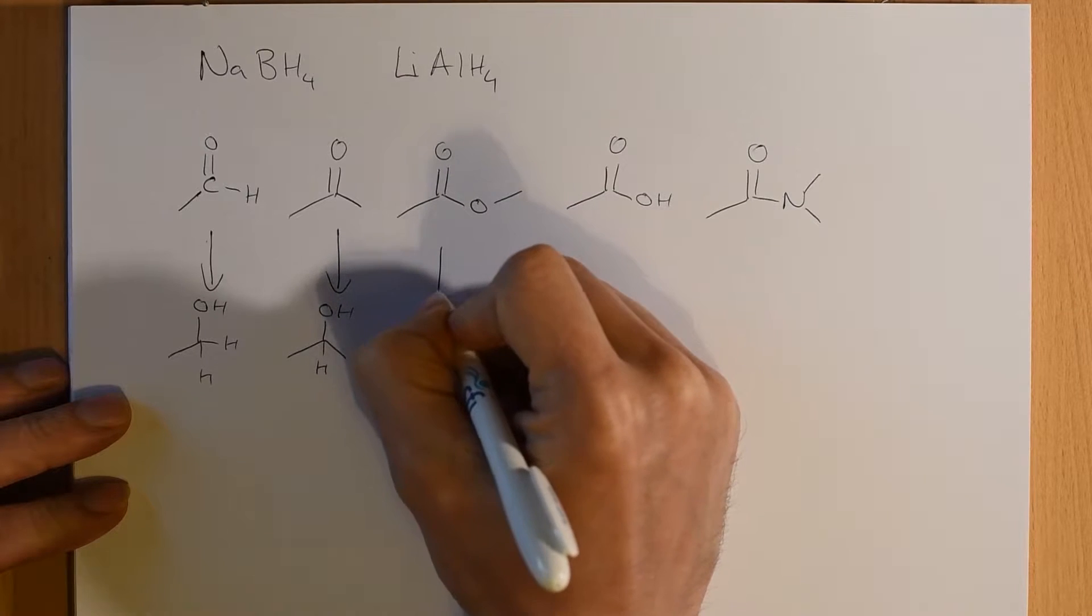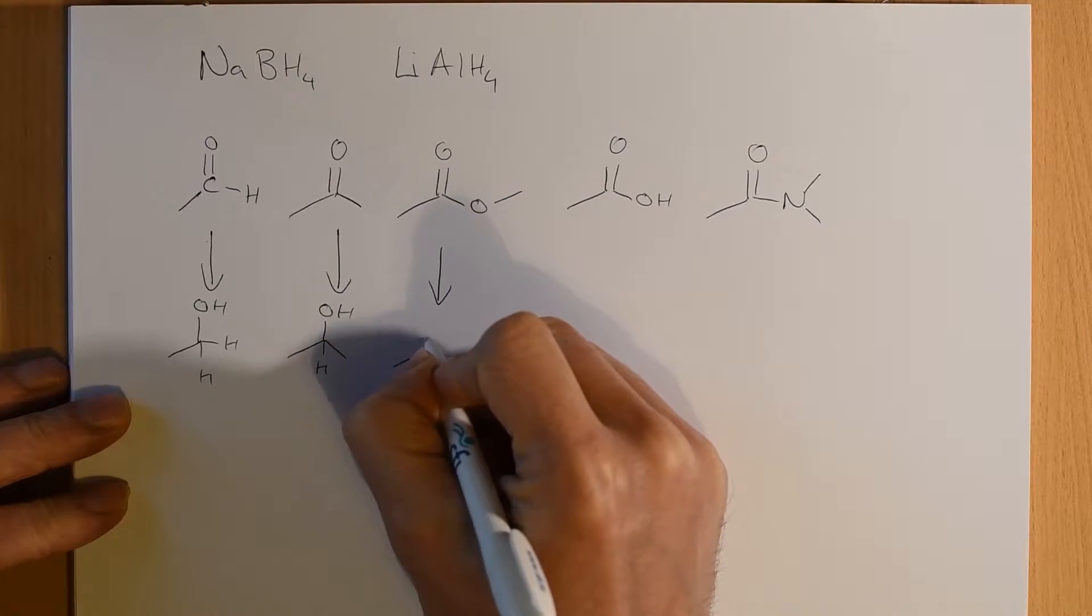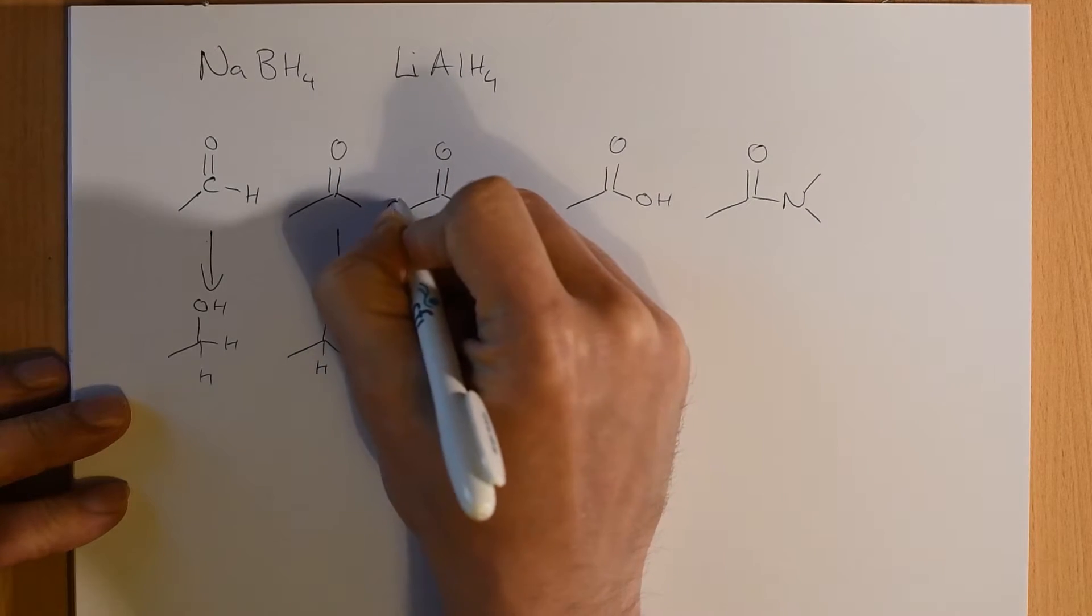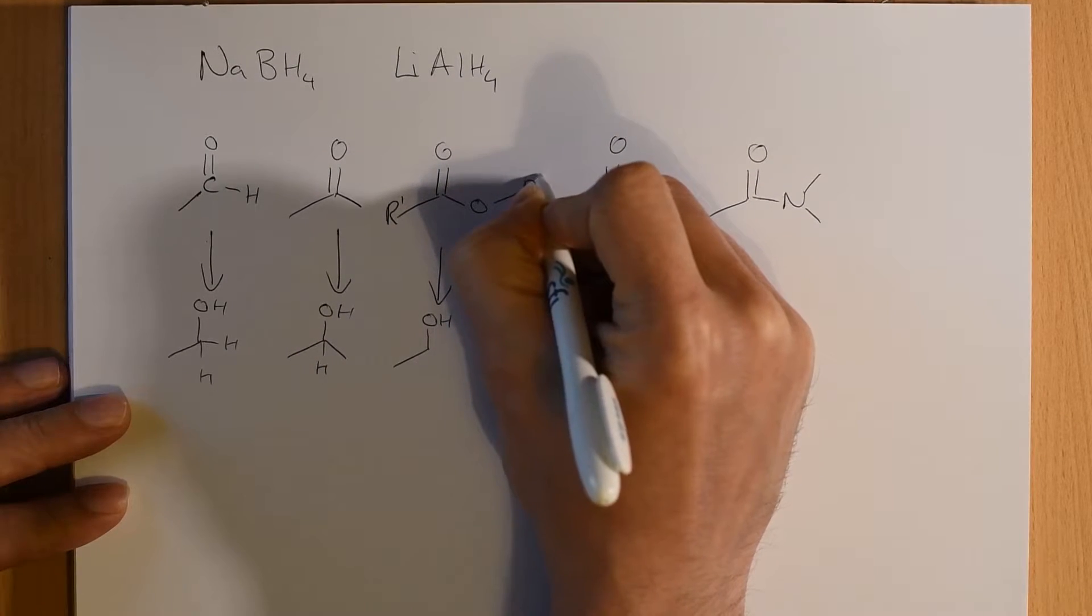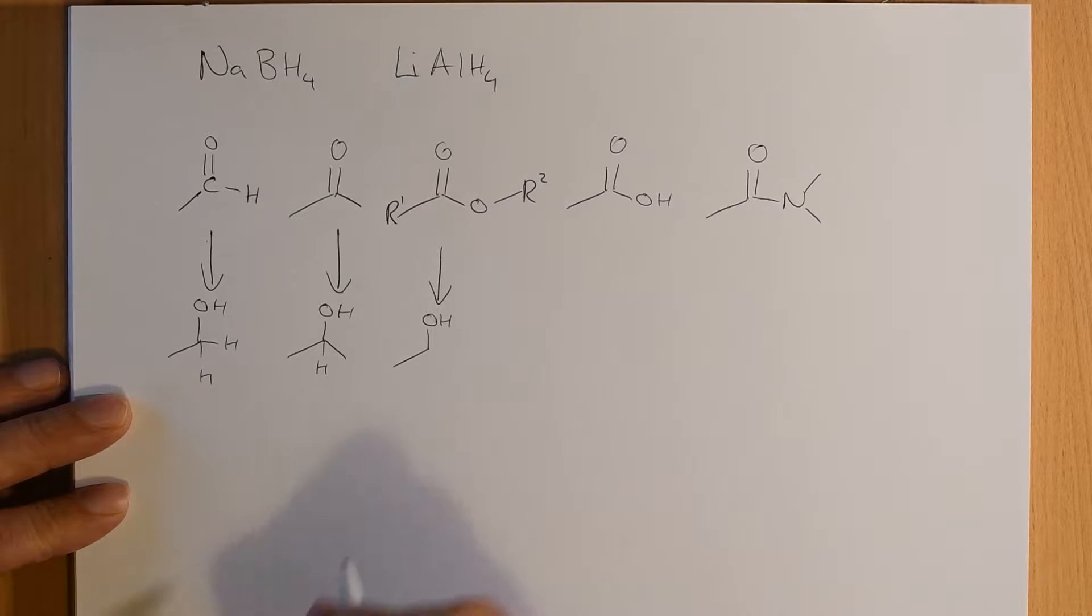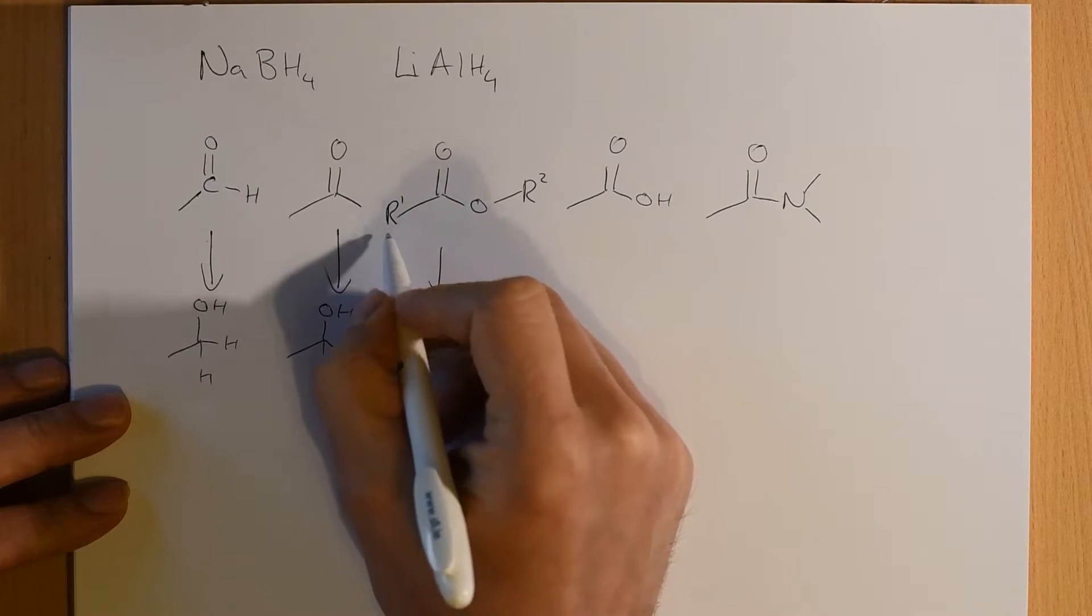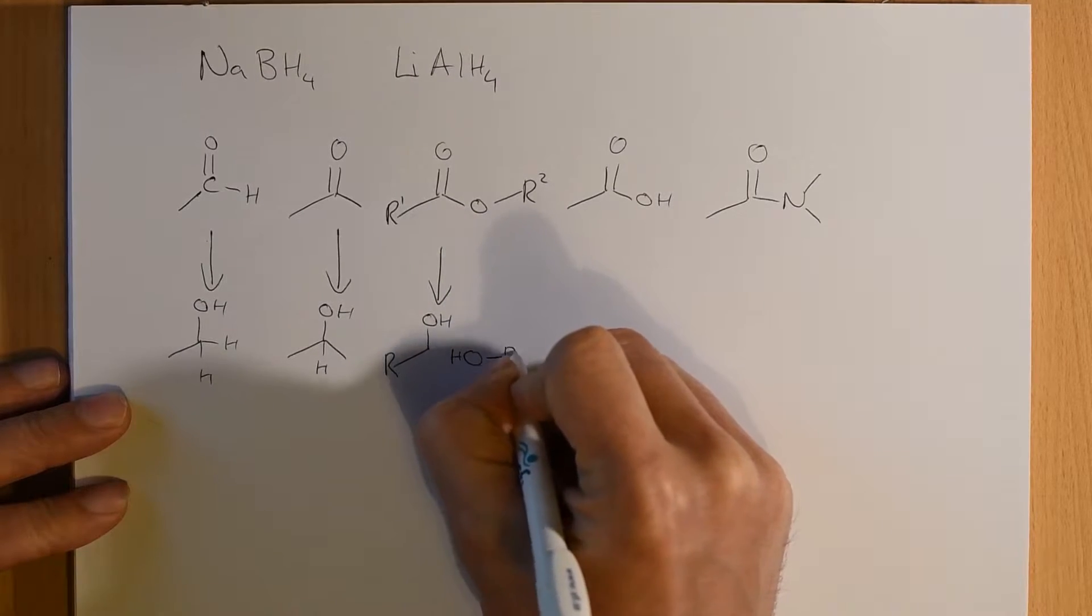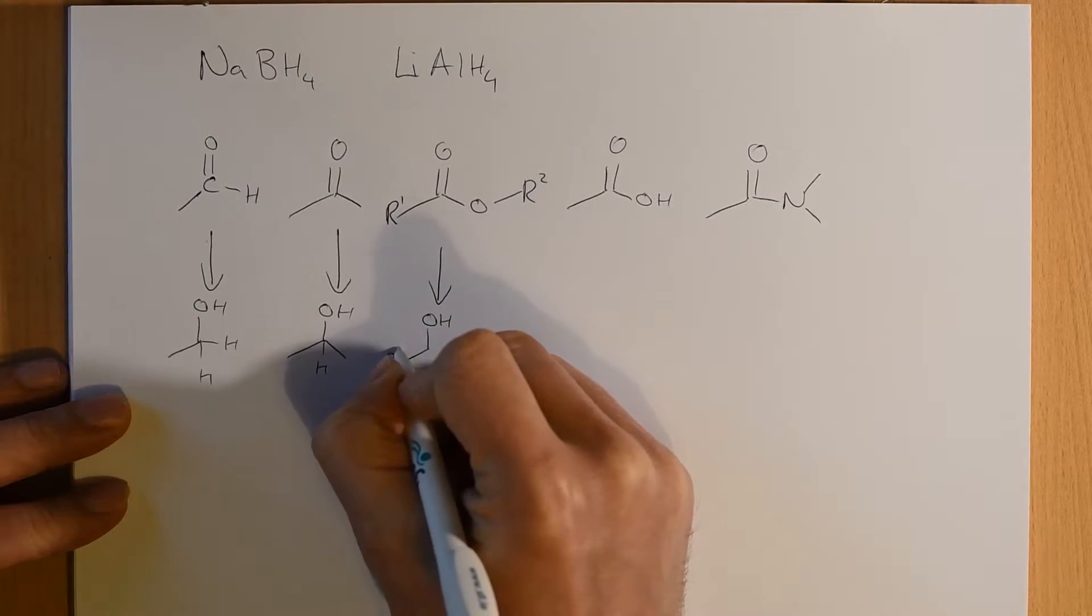If you reduce an ester, you are going to get a primary alcohol. There are any number of possible substituents here. You'll get a primary alcohol from the carboxylate side, and you'll get whatever the other alcohol was from the other half of the ester.